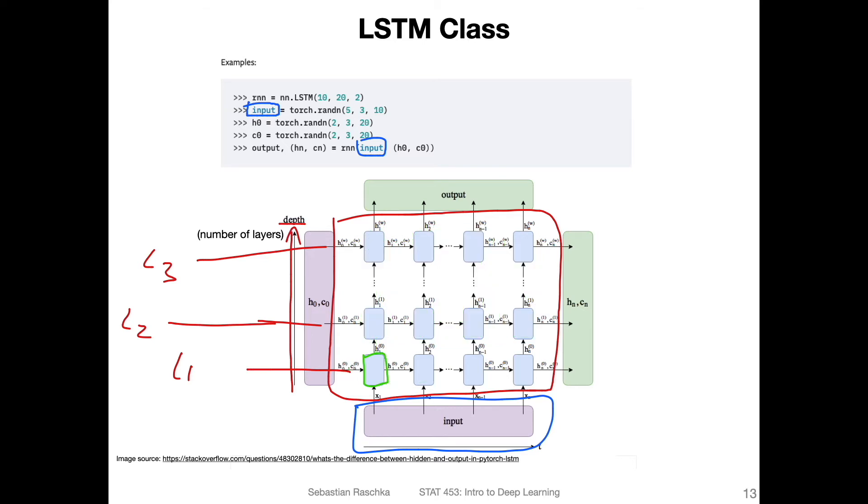So this is our input here at the bottom. And now h0 and c0 in a different color, maybe yellow, so these are here our initial states that go into the LSTM. So here the two is for the number of layers.